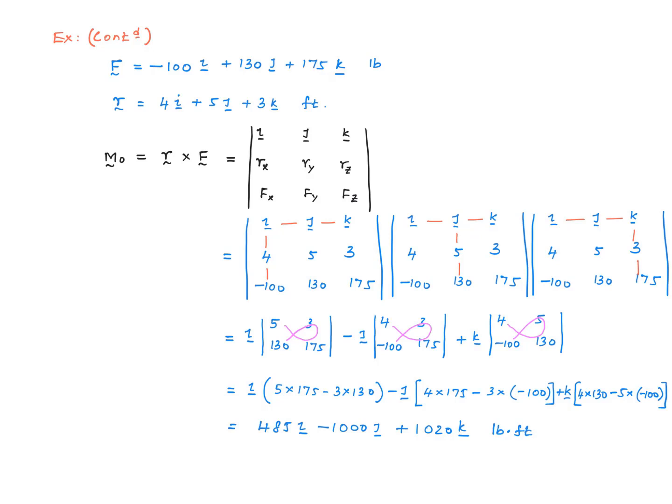Now we know this part right here is our moment about the X axis. -1000 is the moment about the Y axis, and 1020 is the moment about the Z axis.